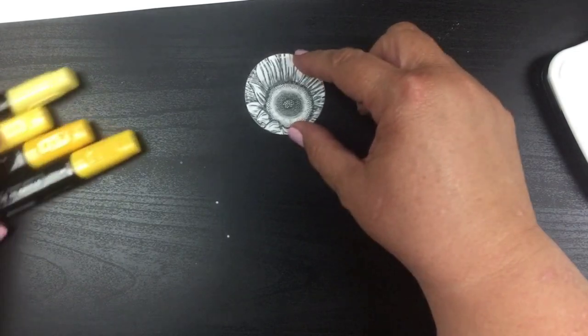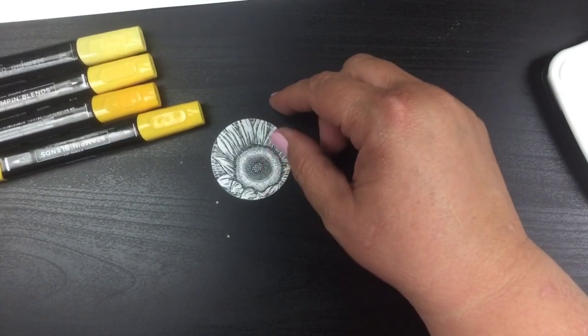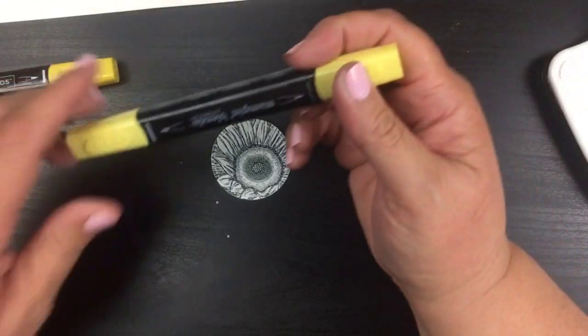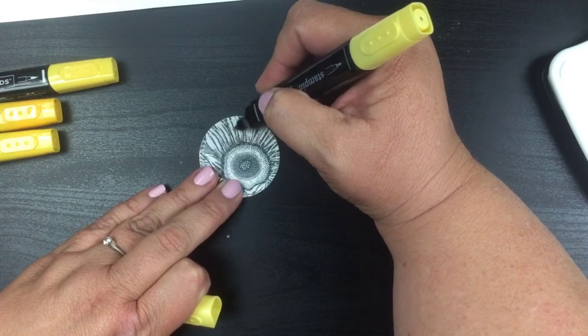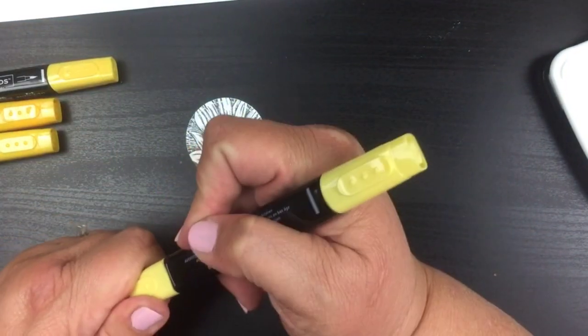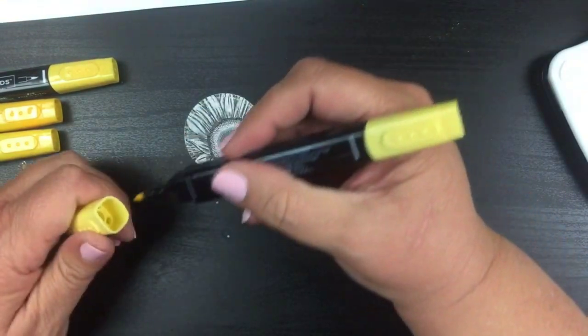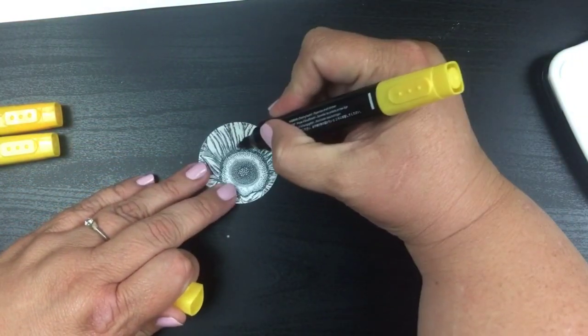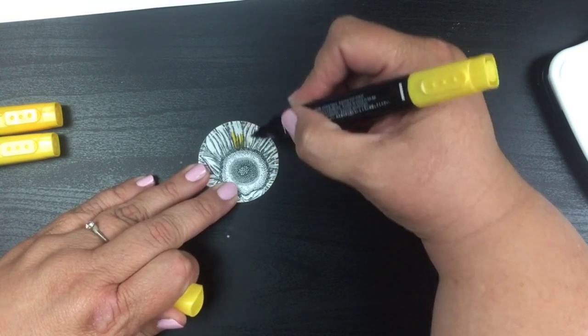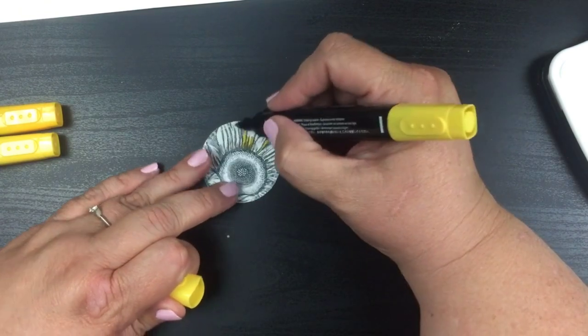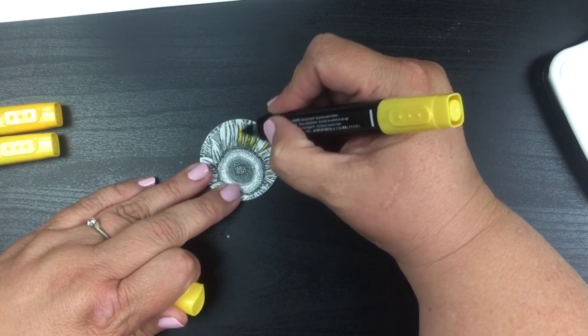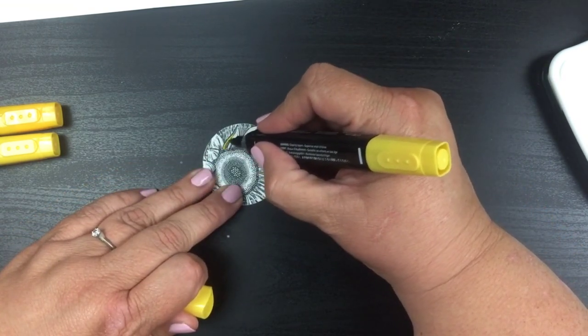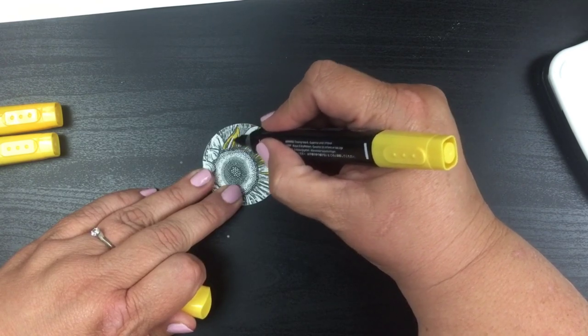I've got some yellow Stampin' Blends, the light and dark Daffodil Delight and the light and dark Mango Melody. We're gonna color that in using just this little... that one is a little bit dried out. Okay, that's better. So I'm just gonna go around in certain areas and give it a little bit of texture there, all the way around.